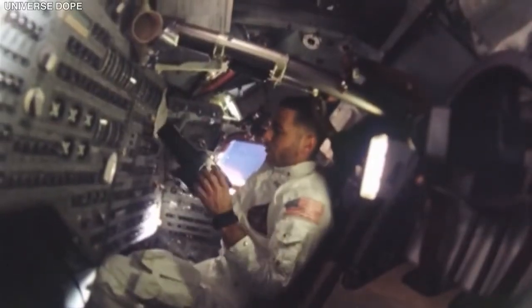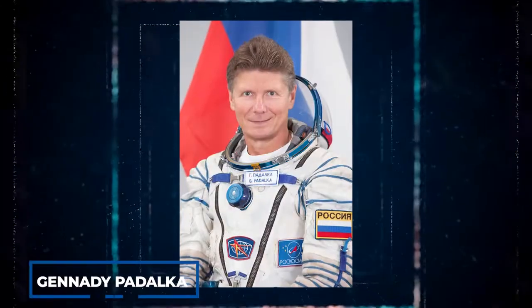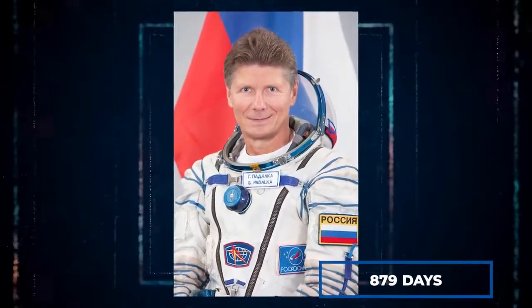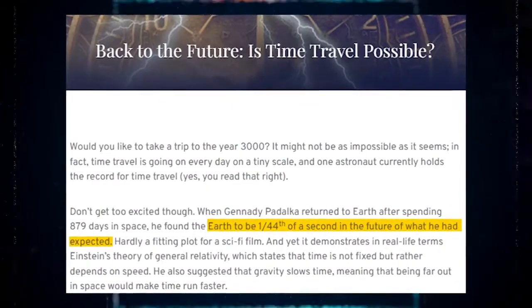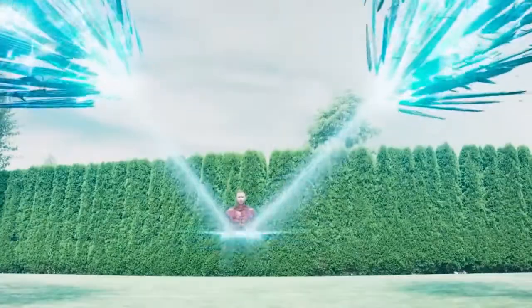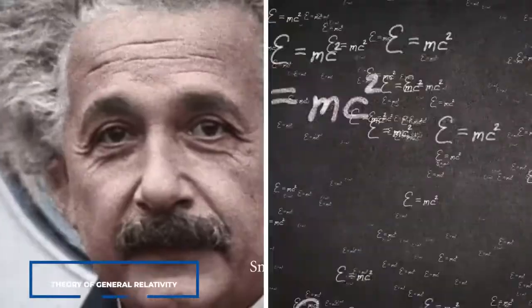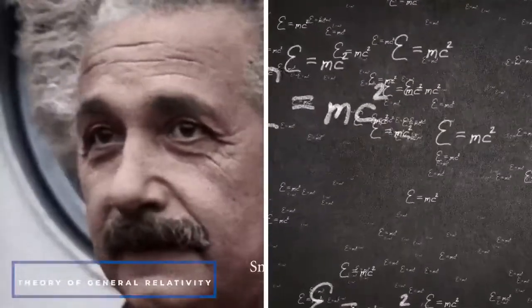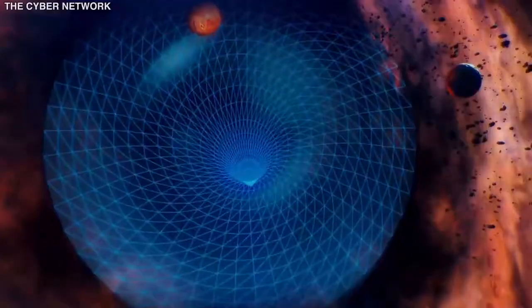When Gennady Padalka returned to Earth after 879 days in space, the planet was 1/44th of a second in the future of what he anticipated. Oddly a fitting plot for a sci-fi film. Nevertheless, it proves in real life Einstein's theory of general relativity, which asserts that time is not fixed but rather dependent on speed. He also suggested that gravity slows time, implying that time would pass more quickly in space.